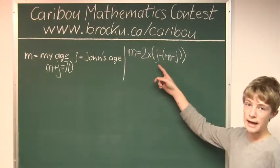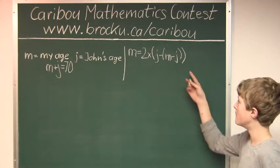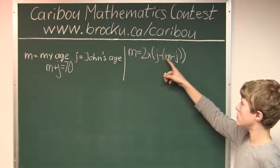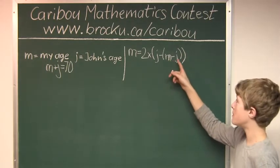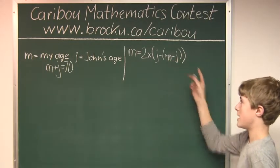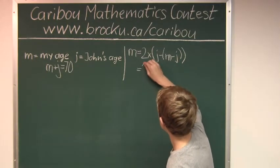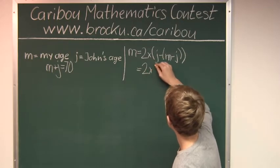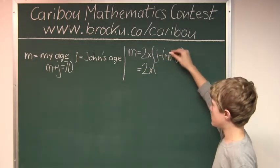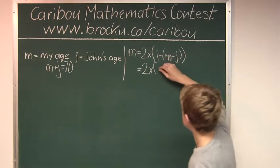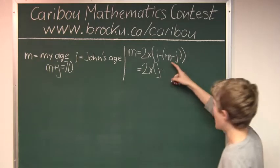A minus sign in front of a bracket changes the sign of each term. So, this minus sign would change plus m to minus m and it would change minus j to plus j. So, that would be j minus m plus j.